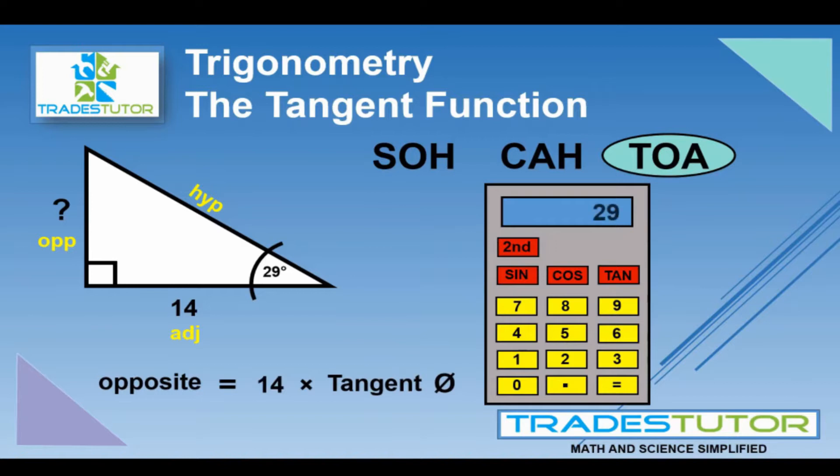and this is straight old, hit the tangent button. And that'll derive the relationship between the opposite and the adjacent. And it works out to be 0.554. So, you replace the tangent down there with the 0.554. And the opposite works out to be 7.76.